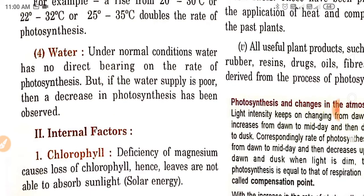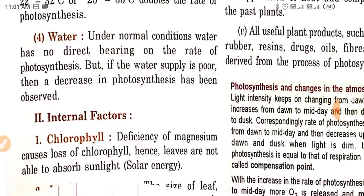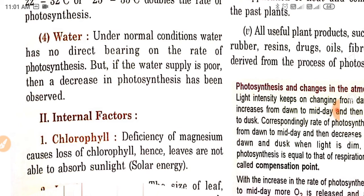Regarding water: under normal conditions, water has no direct bearing on the rate of photosynthesis. But if the water supply is poor, then a decrease in photosynthesis has been observed, because water is an important constituent of the process of photosynthesis. Some internal factors are also responsible. For example, chlorophyll deficiency — caused by a deficiency of magnesium — leads to loss of chlorophyll, and hence leaves are not able to absorb sunlight.